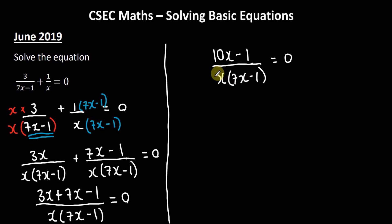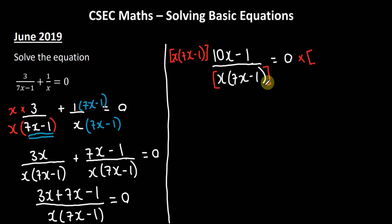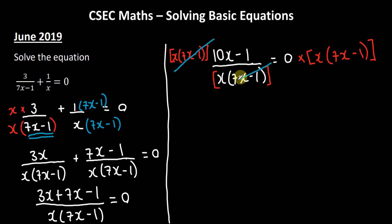To get rid of the denominator, we multiply both sides by it. So we multiply both sides by x times (7x minus 1). On the left side, the denominator cancels, leaving us with 10x minus 1. On the right side, 0 times anything is 0, so we're left with 10x minus 1 equals 0.